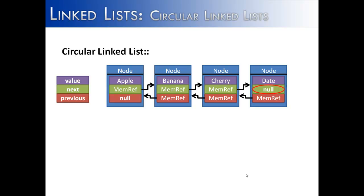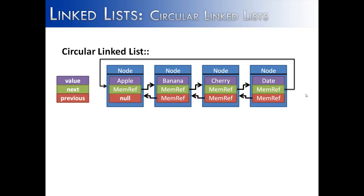You can see right here that the last pointer inside of the node is pointing to null, meaning there is no node after it. If we want to make this a circular linked list, we simply point that node to the first node.